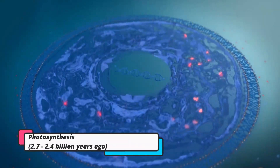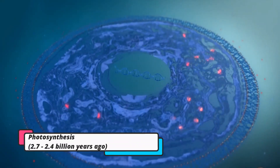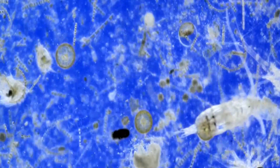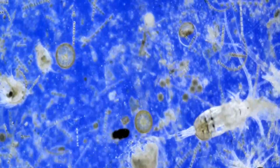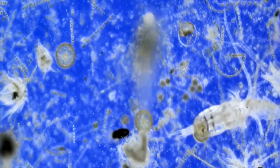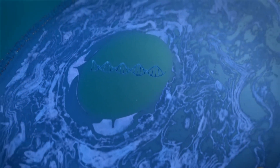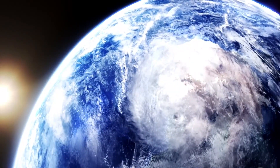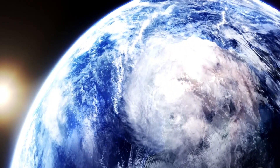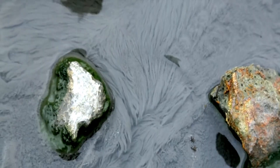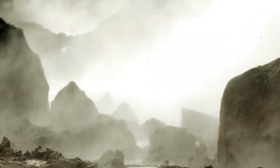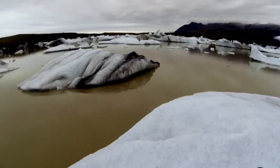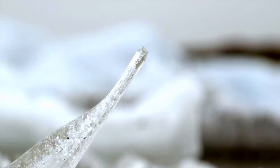Photosynthesis, 2.7 to 2.4 billion years ago. In a monumental leap, cyanobacteria — the ancient architects of photosynthesis — harnessed the sun's energy. This revolutionary feat not only fueled their own existence, but released oxygen into the atmosphere, heralding a turning point in Earth's history. The gradual oxygenation of the atmosphere set the stage for the rise of oxygen-dependent life forms.